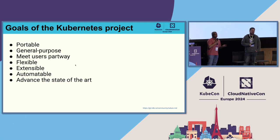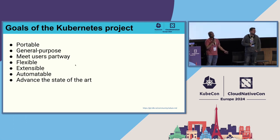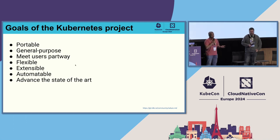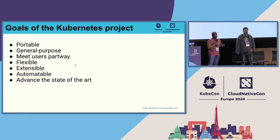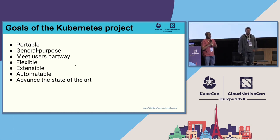You're all here at KubeCon. You've seen how many people are attending. The reason you are here is because you want to learn Kubernetes, how Kubernetes works, how the Kubernetes community works. The basic goals of the Kubernetes project when it started looked something like this: it's got to be portable, general purpose. So do you think we actually do all these things?